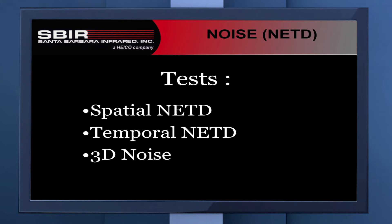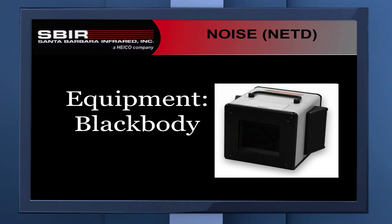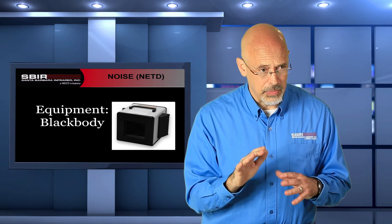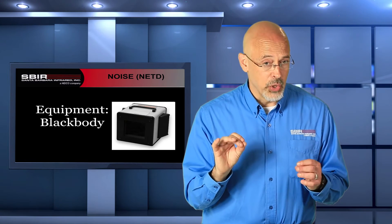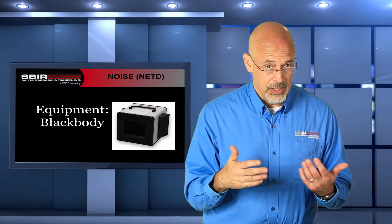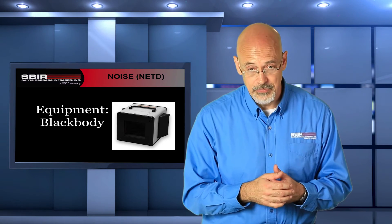We are going to be talking about three types of tests in this video. Spatial NETD, temporal NETD, and the more modern method, which is referred to as 3D noise. All three use the same kind of equipment. We need a calibrated temperature source, which is typically a blackbody. We know exactly the temperature that's being presented. Modern blackbodies should be able to easily be controlled within a millikelvin, one thousandth of a degree. The Santa Barbara infrared blackbody we refer to as being tenth of a millikelvin accuracy.